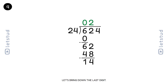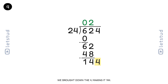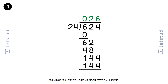Let's bring down the last digit. We have 144. How many times does 24 fit into 144? It fits 6 times. We brought down the 4, making it 144. 24 fits into 144 6 times. 6 times 24 is 144. 144 minus 144 leaves no remainder.